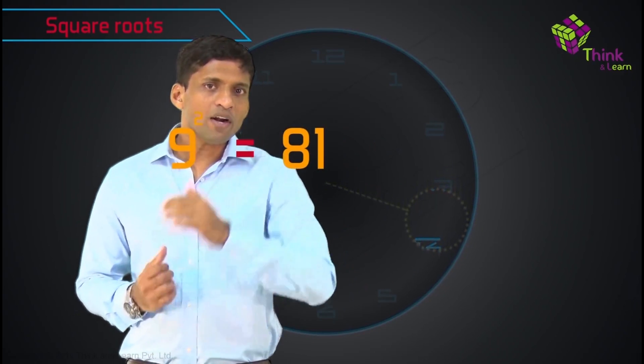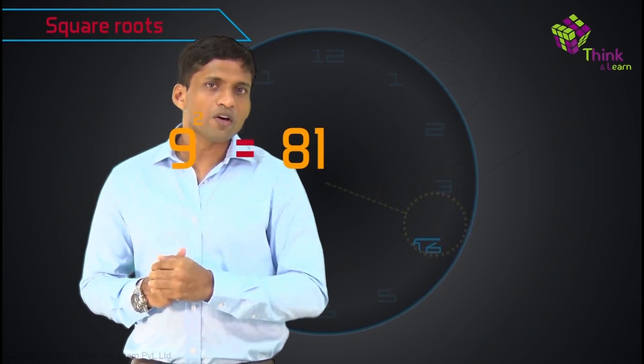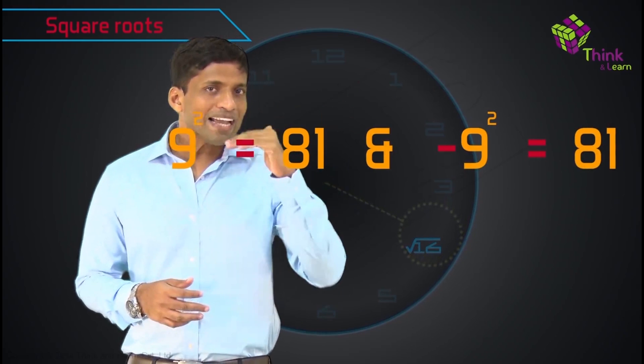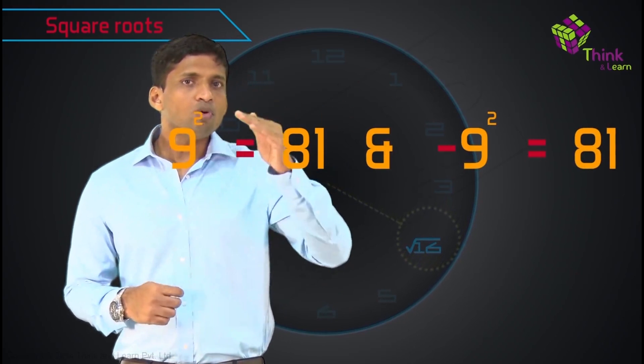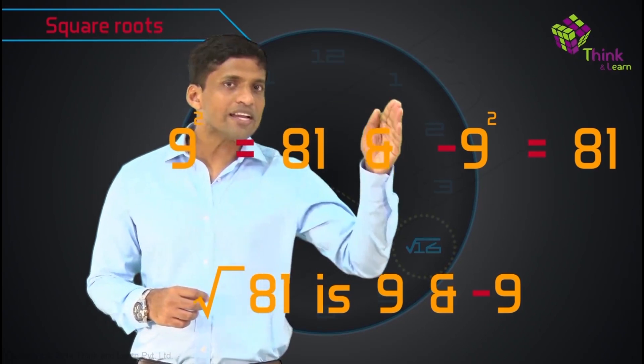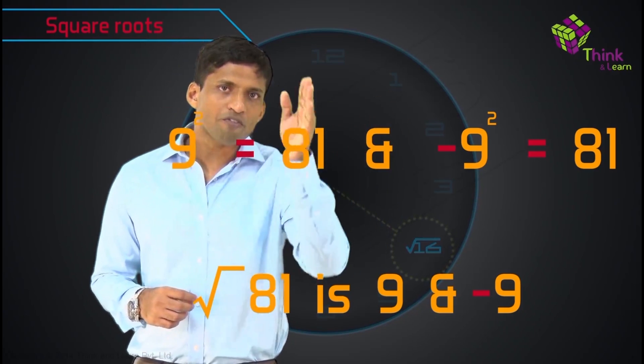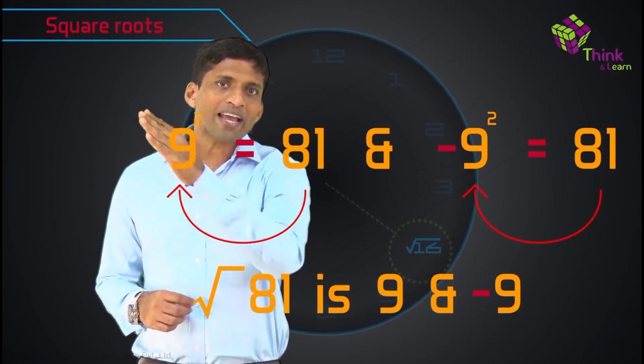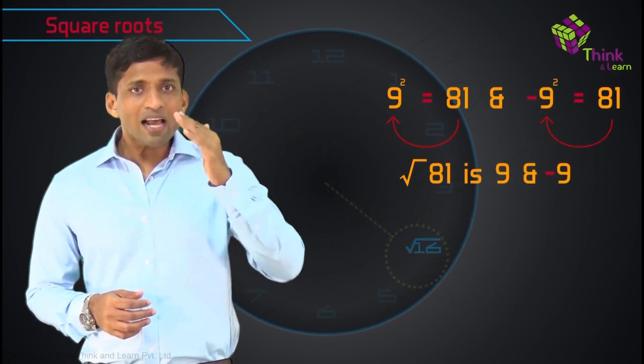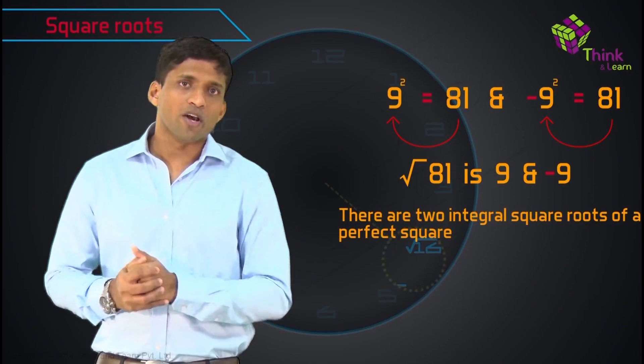Now, 9 square is 81. Just to understand this further, 9 square is 81. Minus 9 square is also 81. So we can actually say that square roots of 81 are 9 and minus 9, because in both the cases, when I move from right to left, I am either getting 9 or minus 9. Therefore, there are two integral square roots of a perfect square.